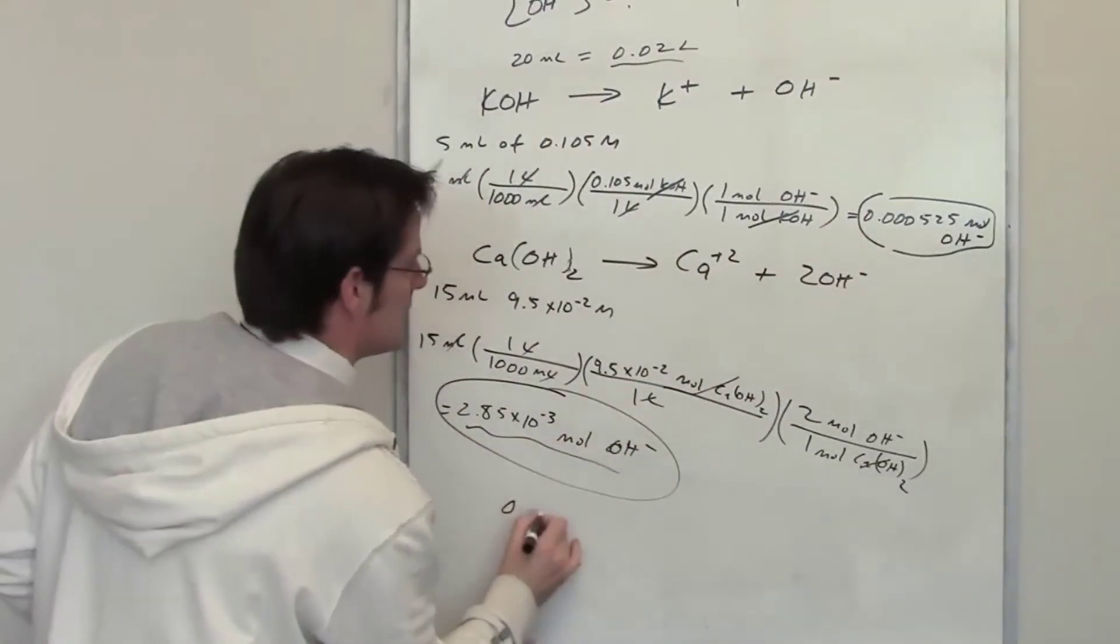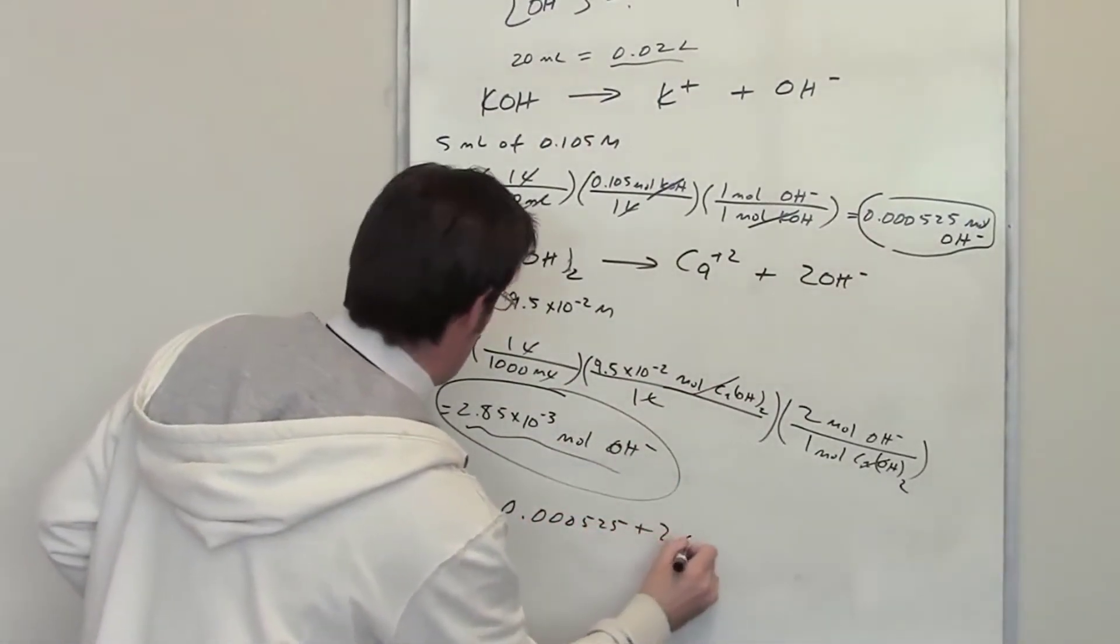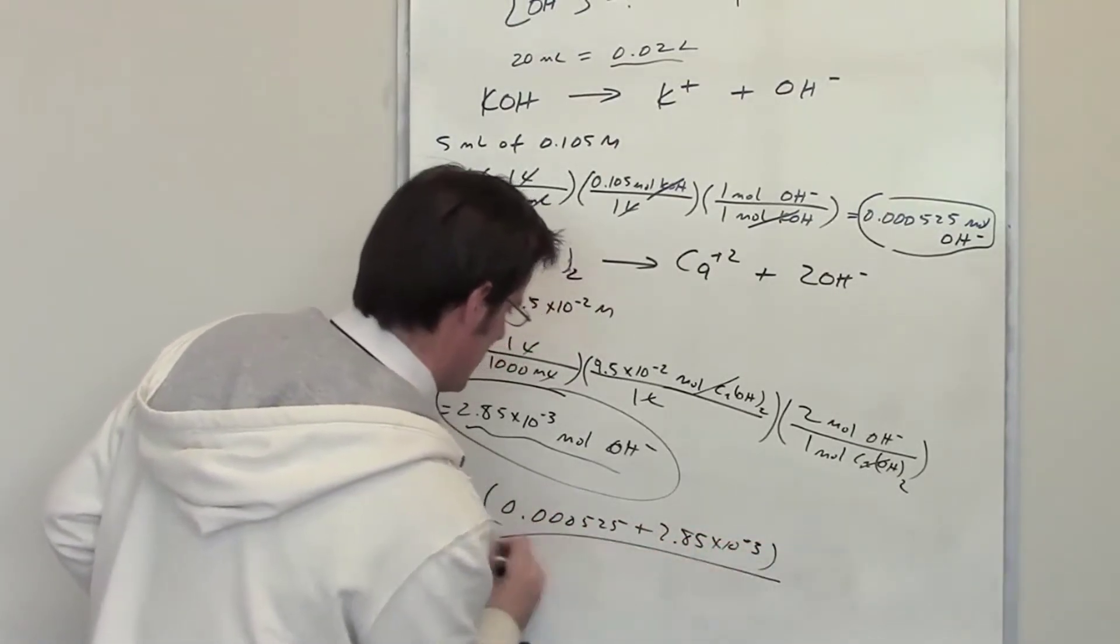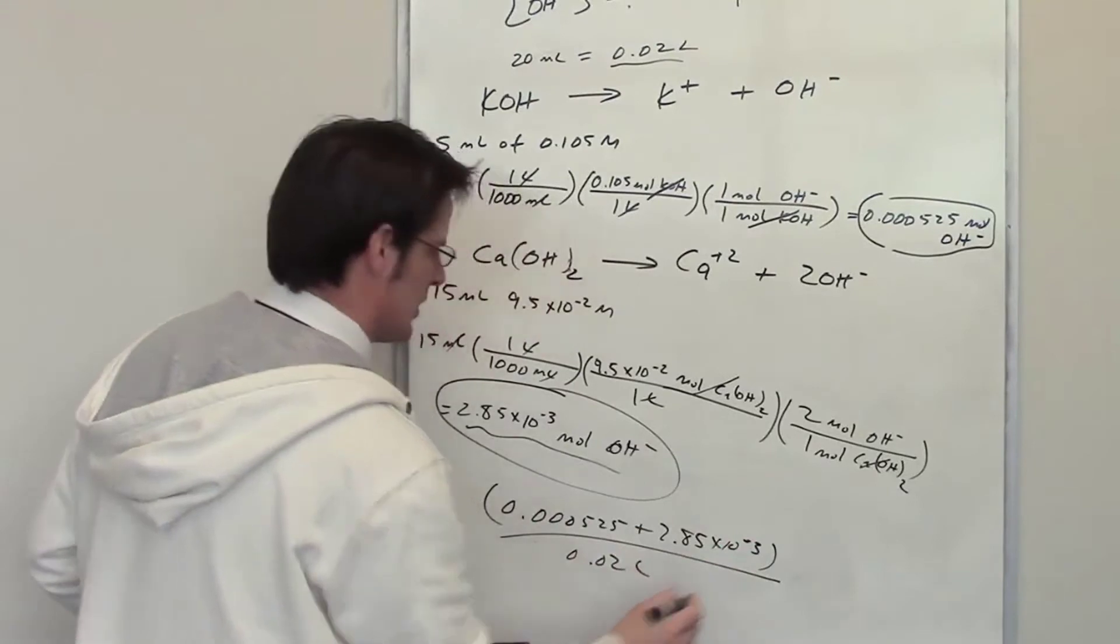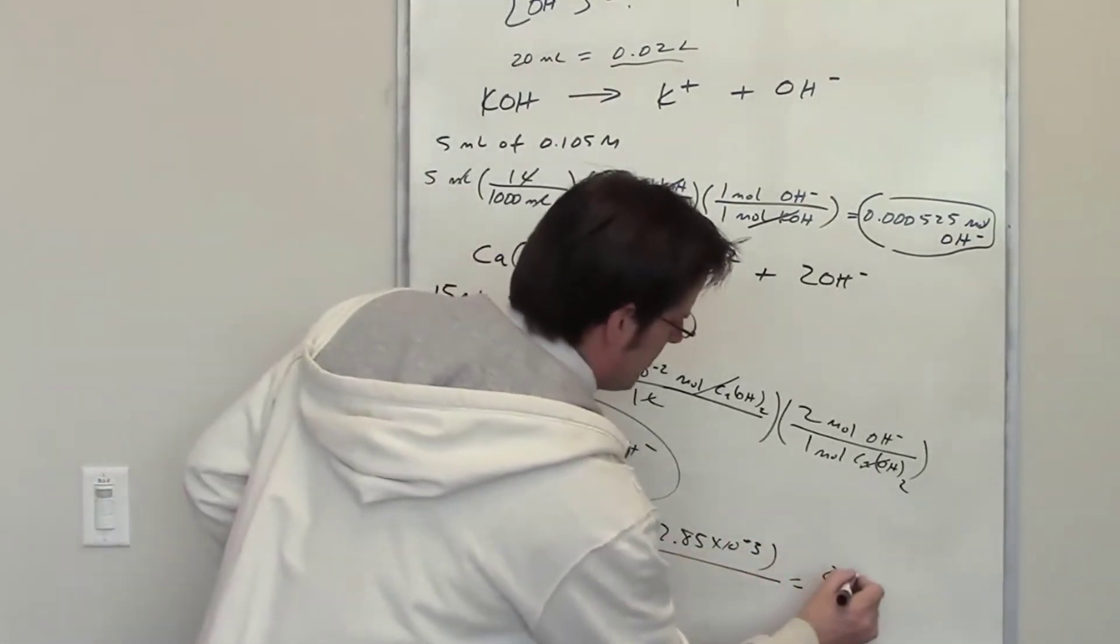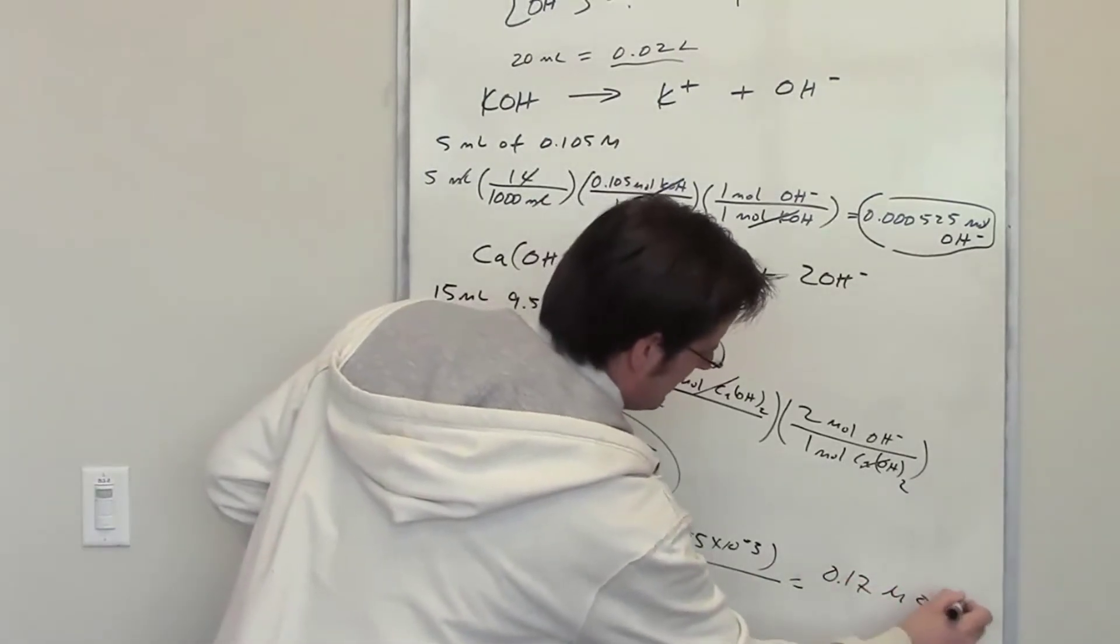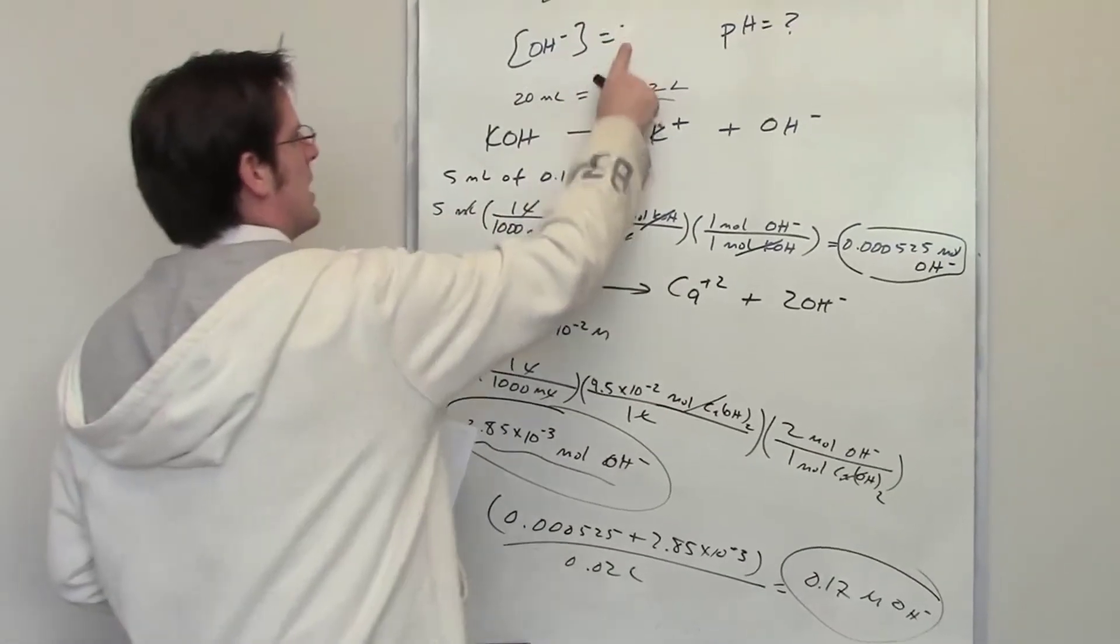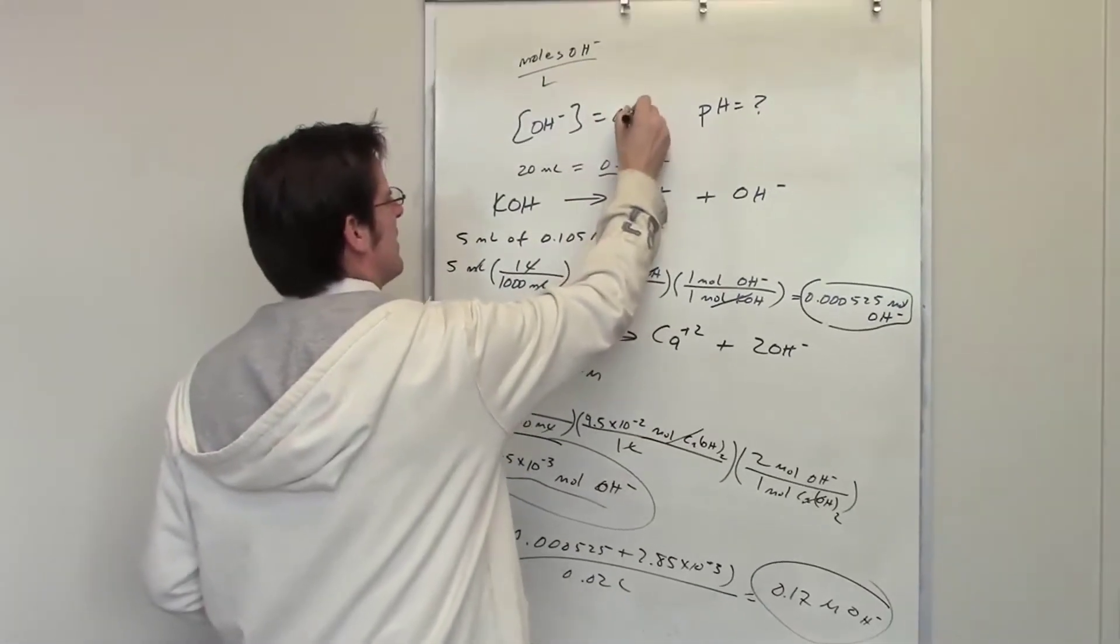I've got 0.000525 plus 2.85 times 10 to the negative 3rd. This is the number of moles of hydroxide. I divide that by 0.02 liters, and that gives me the total concentration of hydroxide as being 0.17 molar hydroxide. That is the final concentration of hydroxide. I'll go ahead and throw that up here then, 0.17 molar.